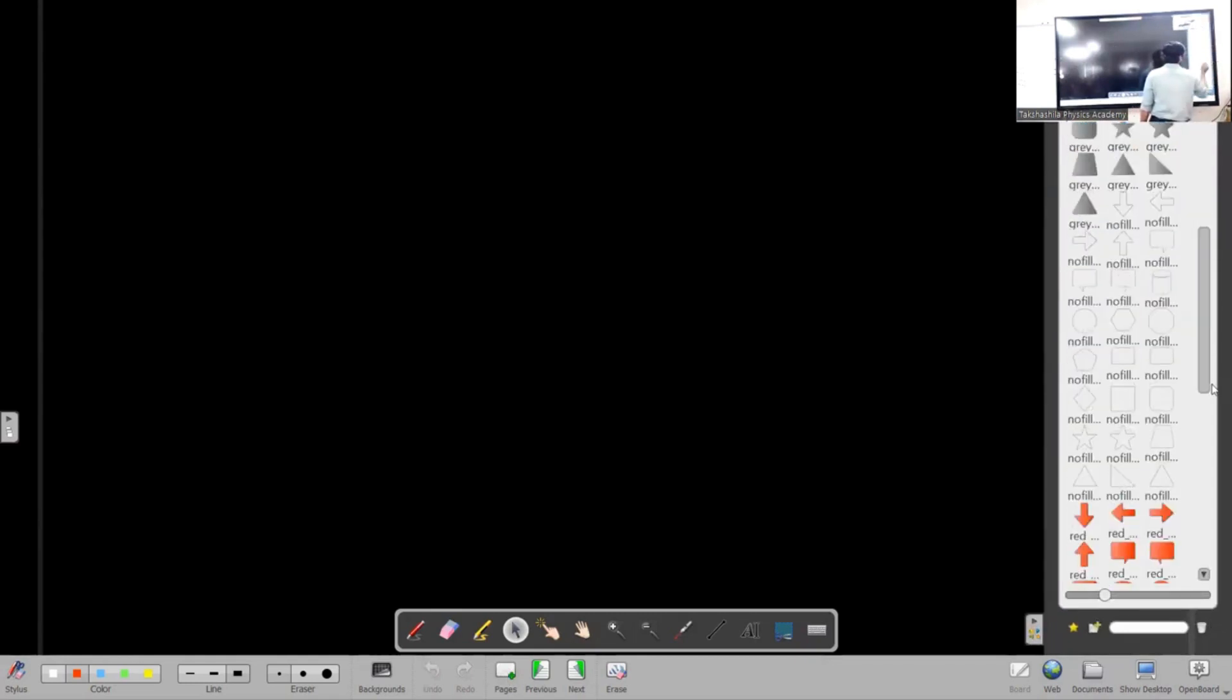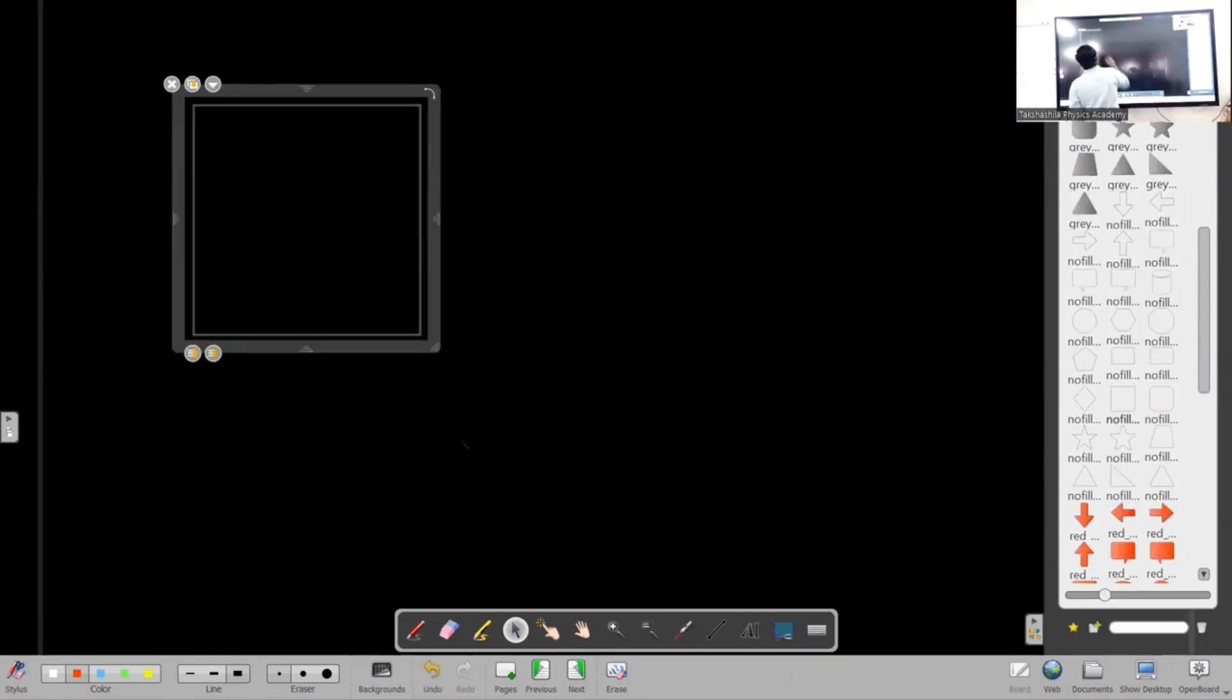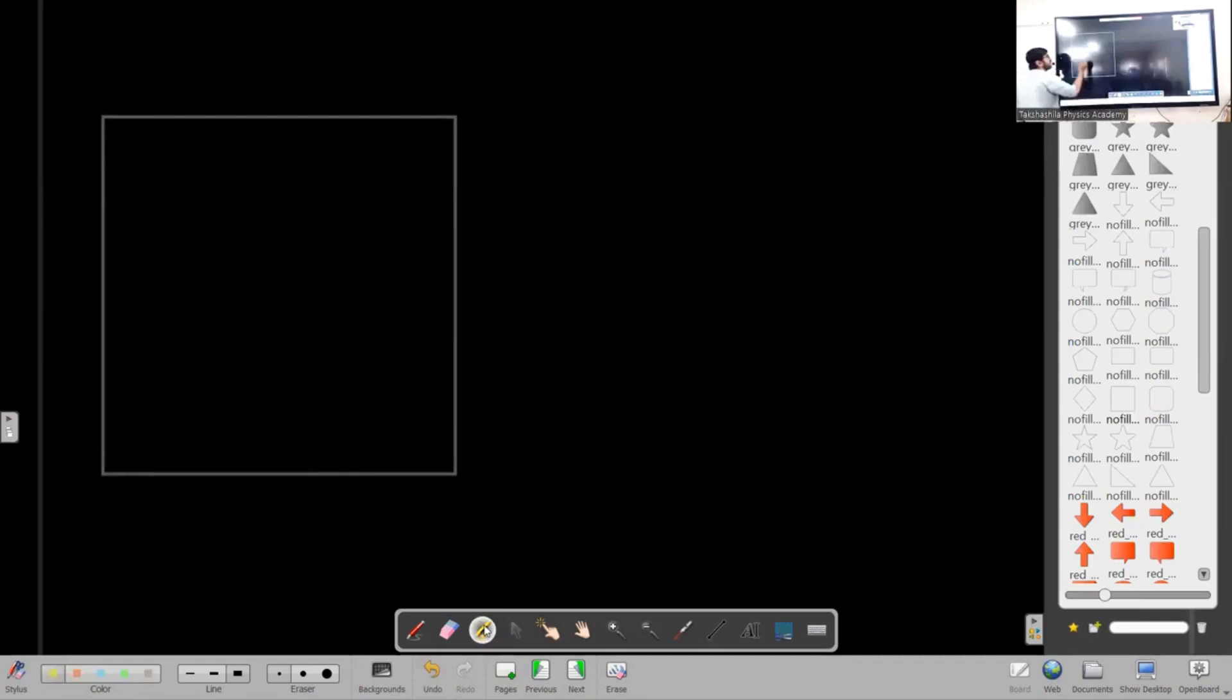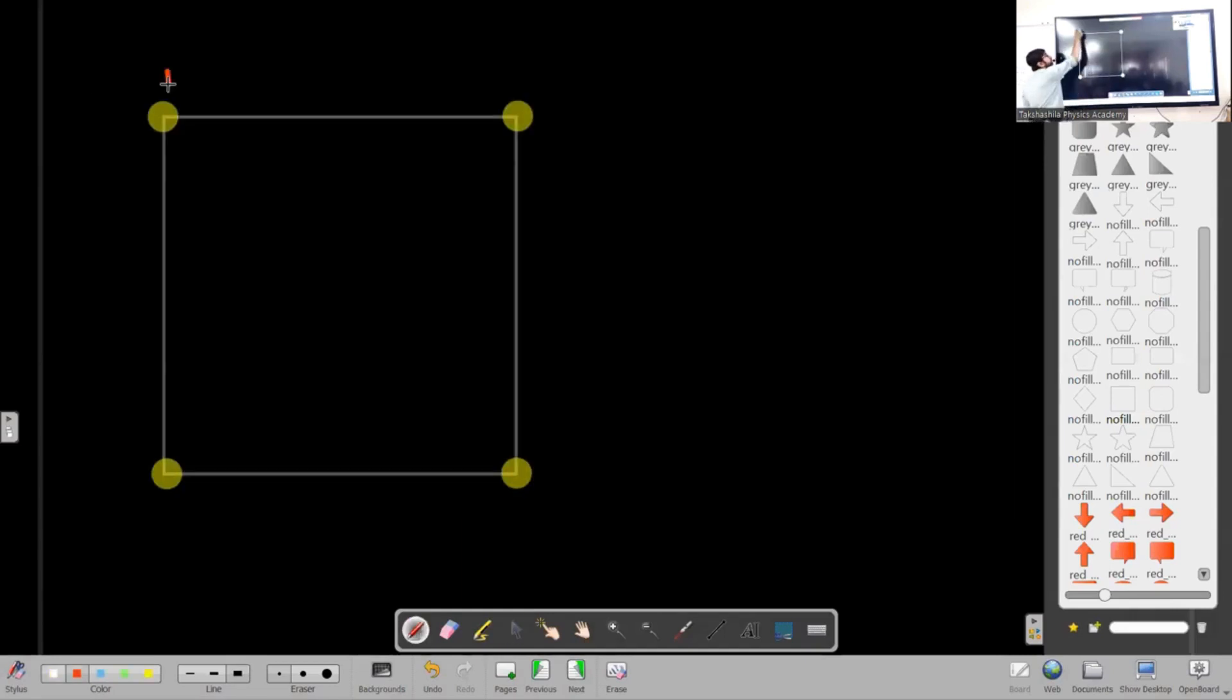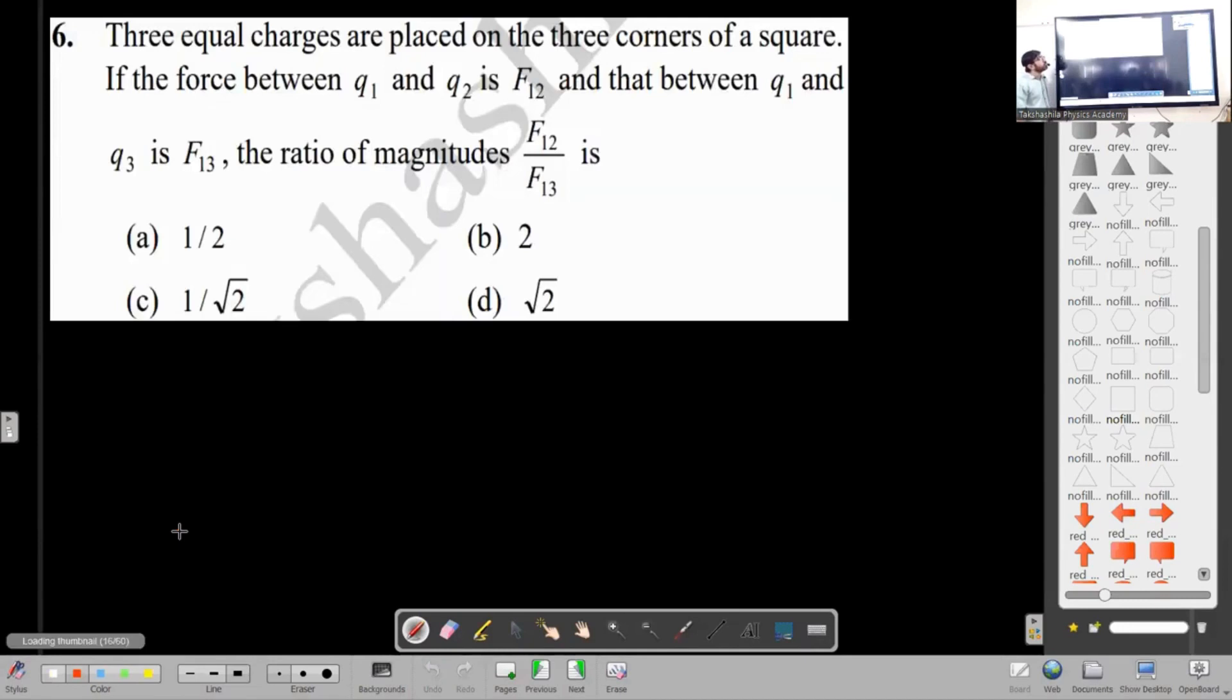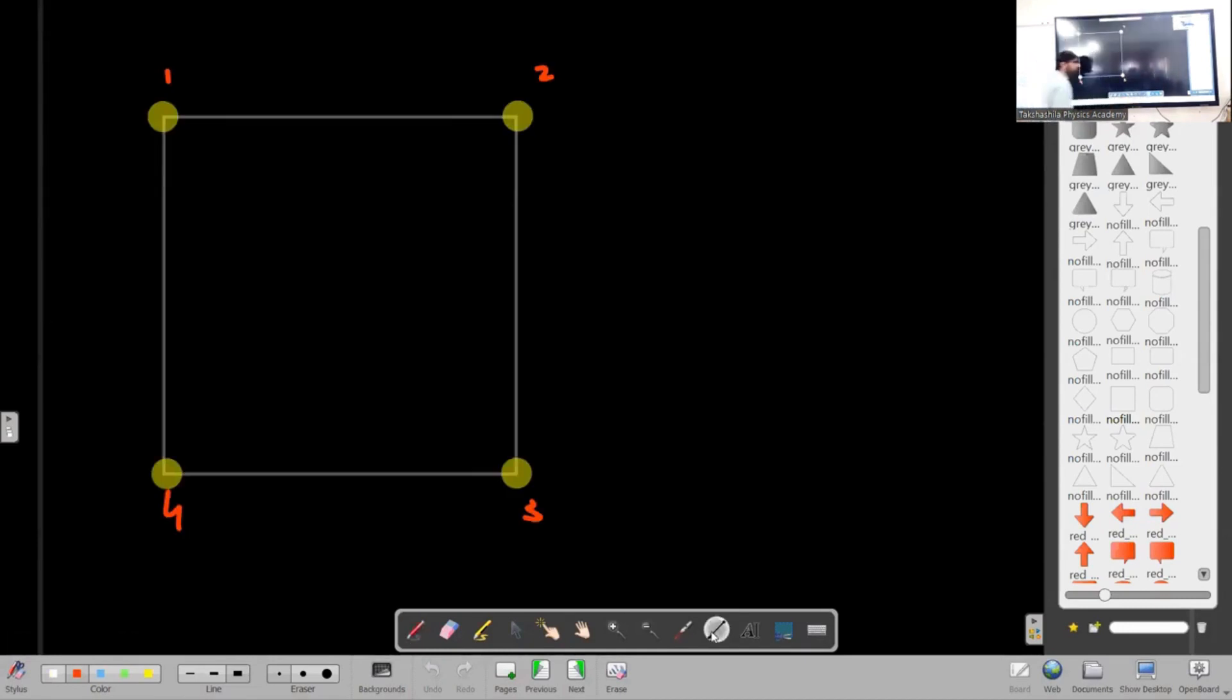So the question is simple, provided you know basic formulas of forces. You have a square. F12, F13, I will call this as 1, 2, 3, and 4. Force between 1 and 2. What is the direction of force between 1 and 2? If the side length is l.